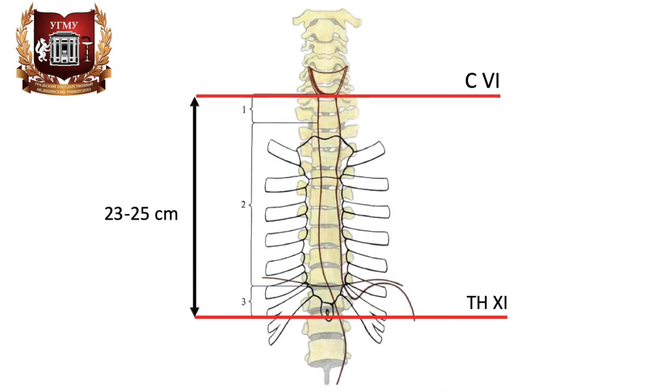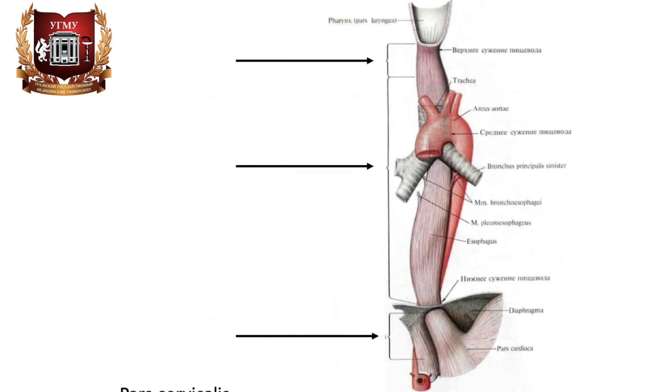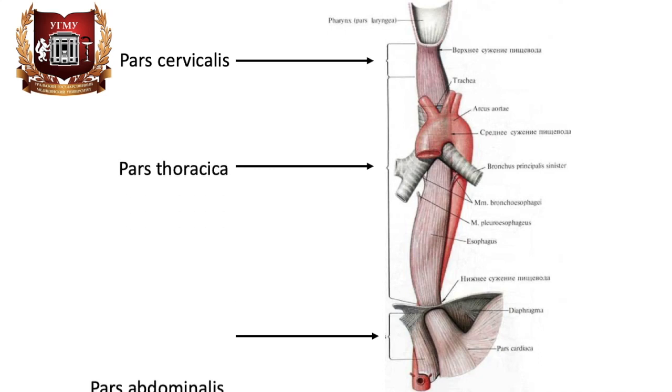The esophagus has three parts: cervical, thoracic, and abdominal. The longest part of the esophagus is the thoracic part, and the shortest is the abdominal part.